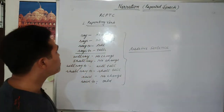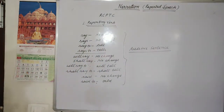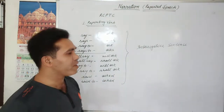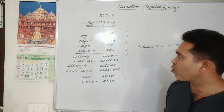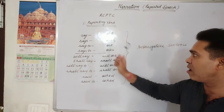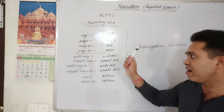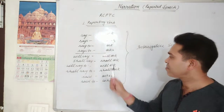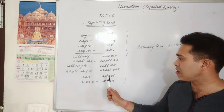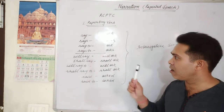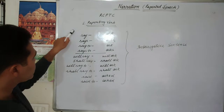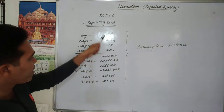If the sentence is interrogative, the reporting verb changes as follows: 'say' becomes 'ask'; 'says' becomes 'ask'; 'say to' becomes 'ask'; 'says to' becomes 'ask'; 'will say' becomes 'will ask'; 'shall say' becomes 'shall ask'; 'will say to' becomes 'will ask'; 'shall say to' becomes 'shall ask'; 'said' becomes 'asked'; 'said to' becomes 'asked'. So if the sentence is interrogative, we use 'ask' in place of the reporting verb.